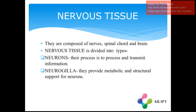The last type of animal tissue for this chapter is the nervous tissue. Nervous tissue is composed of nerves, spinal cord, and brain. Nervous tissue is divided into two types: neurons and neuroglia. Neurons work to process and transmit information, while neuroglia provide metabolic and structural support for neurons.